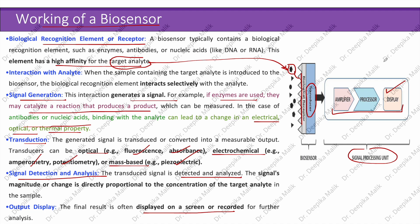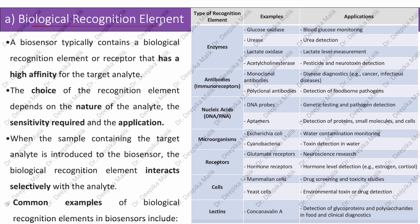Now let us understand in more detail the biological recognition elements. A biosensor typically contains a biological recognition element or receptor that has a high affinity for the target analyte. The choice of recognition element depends on the nature of the analyte, the sensitivity required, and its application. When the sample is introduced, the recognition element interacts selectively with the analyte. Common examples can be seen in the following table.